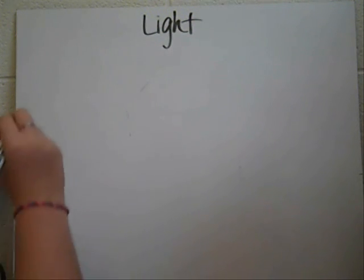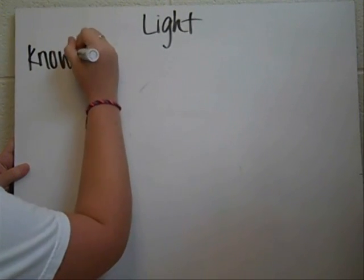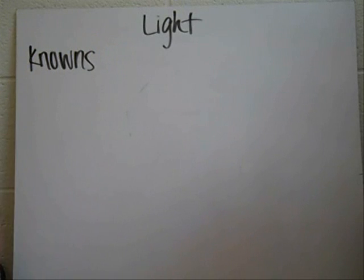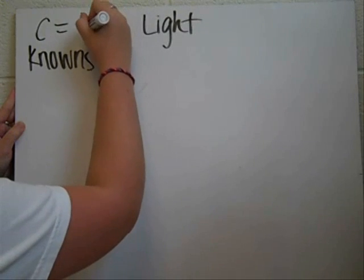All right, and how we're going to solve this is we're going to start by making a list of knowns and unknowns. So our knowns, well I guess first we should find out what equation we're going to use. And the equation we're going to use, since we already have the light constant and the frequency, would be C is equal to lambda nu.